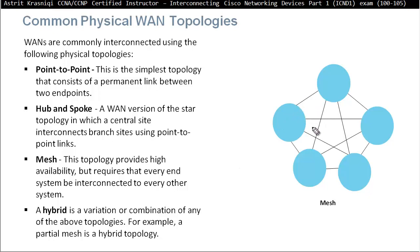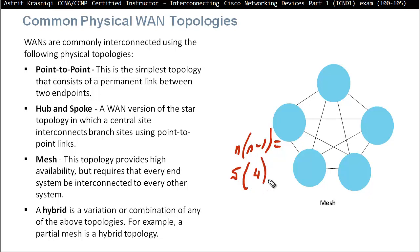The mesh topology formula is n times (n minus 1) to calculate the number of connections. For example, here we have five sites, so that's n = 5. Five minus 1 is 4, so 5 times 4 is 20 — we're going to need 20 connections in a full mesh topology. That's obviously going to increase the amount of money we have to spend on a wide area network.